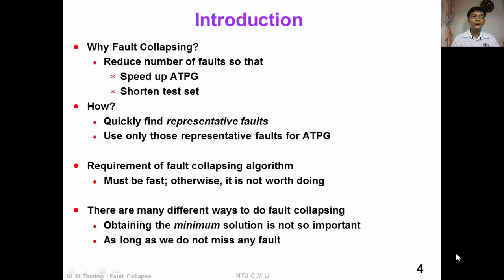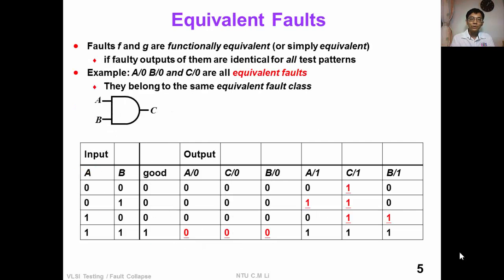Why do we need this? Fault collapsing helps to reduce the number of faults so that we can speed up ATPG and shorten the test length. We can quickly identify a small set of representative faults and use only those for ATPG. The requirement of a fault collapsing algorithm is that it must be fast. Obtaining the minimum solution is not so important, as long as we do a good fault collapsing without missing any faults.